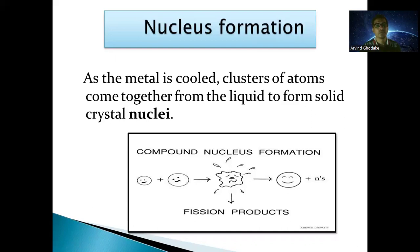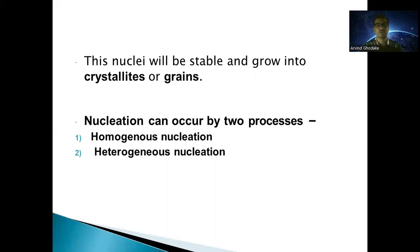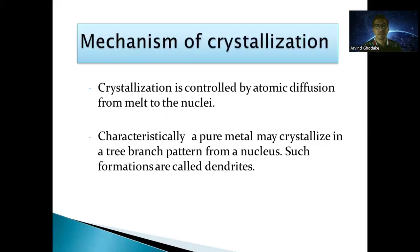Next is nucleus formation. As a metal is cooled, clusters of atoms come together from the liquid to form a solid crystal nucleus. Initially the first nucleus forms, then clusters of atoms come together from the liquid to form solid crystal nuclei. The nuclei become stable and grow into crystallites or grains. Nucleation can occur by two processes: homogeneous nucleation and heterogeneous nucleation, that is uniform nucleation and non-uniform nucleation.